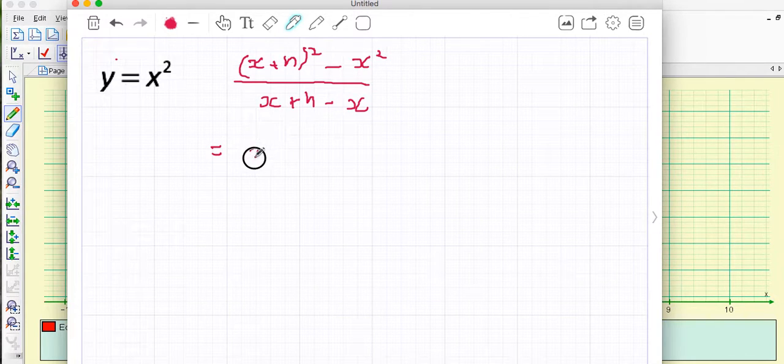I'm going to expand this bracket so I get x squared plus 2xh plus h squared take away x squared and on the bottom if we think about simplifying that bottom x plus h minus x it's just going to have h.